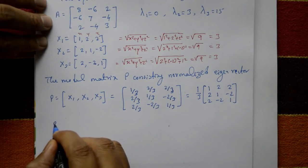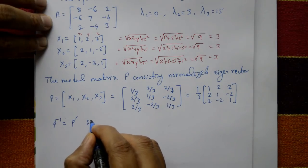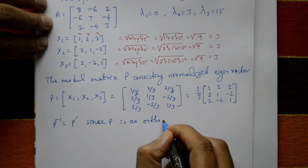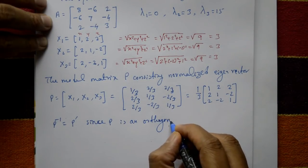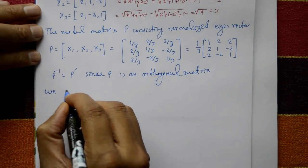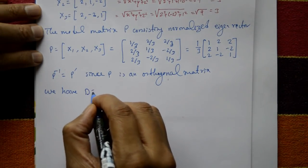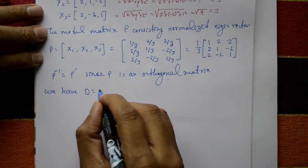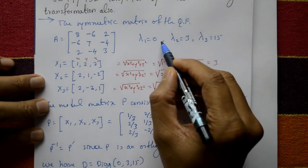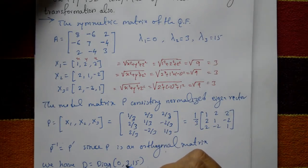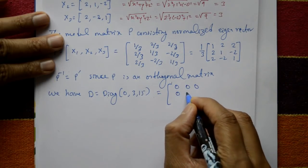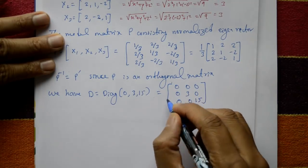Since P is an orthogonal matrix, P inverse = P transpose. We have the diagonal matrix D with the eigenvalues on the diagonal: D = [0, 0, 0; 0, 3, 0; 0, 0, 15]. Whatever eigenvalues we get appear in the diagonal matrix.